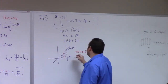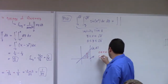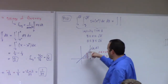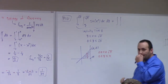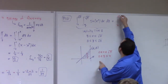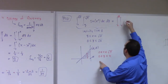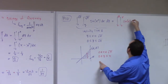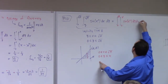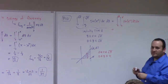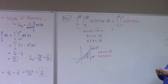Then 0 ≤ y ≤ x. So this becomes: integral from 0 to √π, integral from 0 to x, of sine(x²) dy dx. Now I can do the inner integral because sine(x²) is just a constant with respect to y. So that just integrates to y·sine(x²), evaluated from y = 0 to y = x.